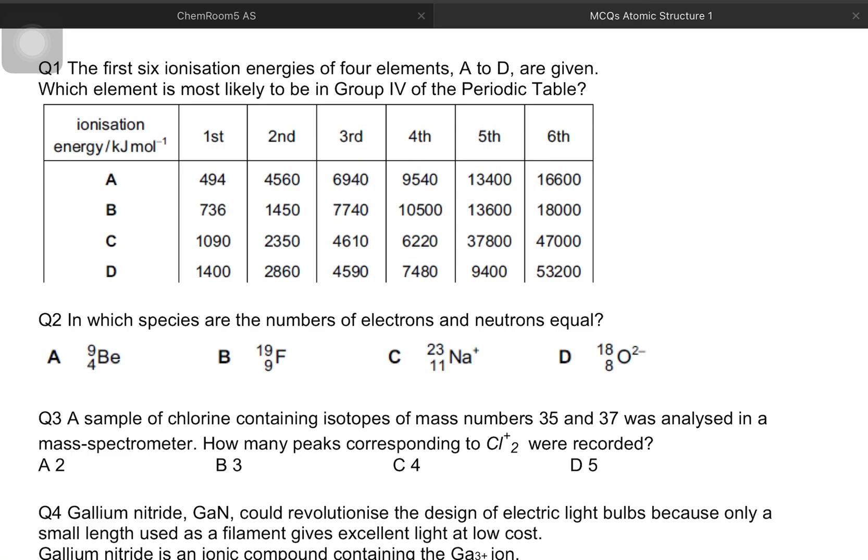Let's try some practice questions. The first six ionization energies of four elements A to D are given. Which element is most likely to be in group four of the periodic table? Now group four means that the four electrons are present in the outer shell, while fifth electron is released from inner shell. So there should be a bigger jump in the ionization energies after the fourth ionization energy. Because four electrons are all in the outer shell, the fifth one is closer to the nucleus.